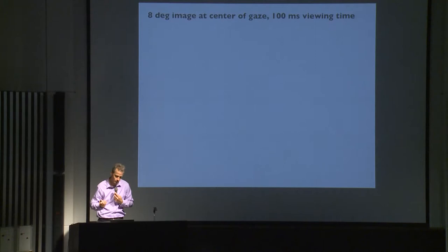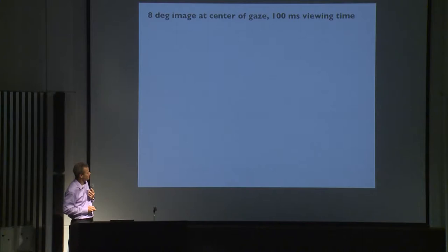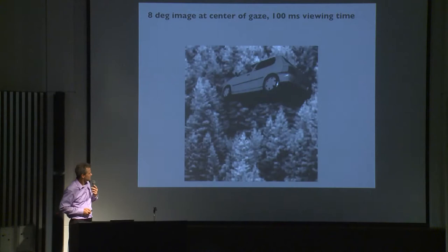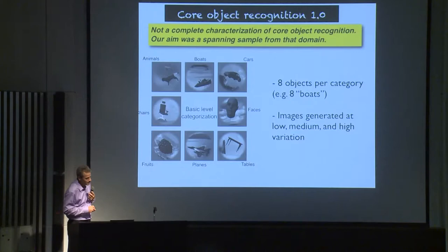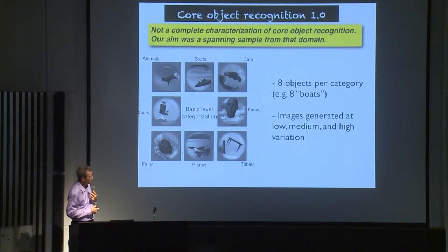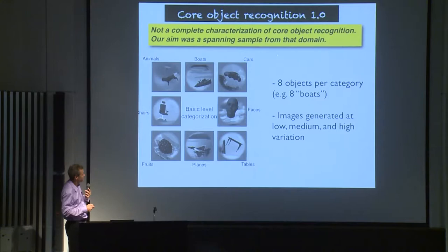To give you a sense that humans do this quite well and it was challenging for computer vision at the time: those were car, plane, face, car, car, car. You can do that quite readily even though I didn't tell you what kind of objects you were going to see. One thing we did was measure human abilities operationally, to define the space of the problem, so we can then assess how well neurons might support it and what neural codes underlie it.